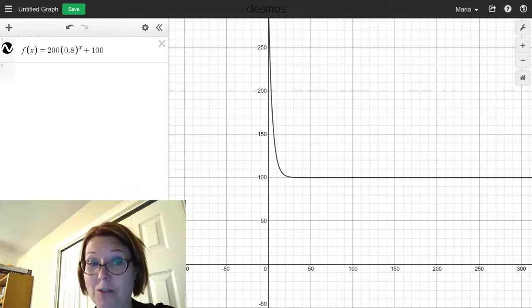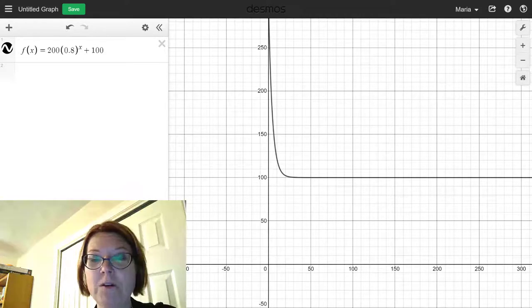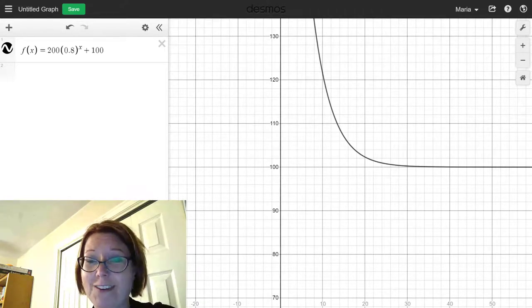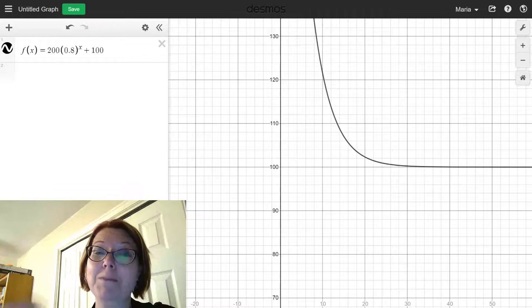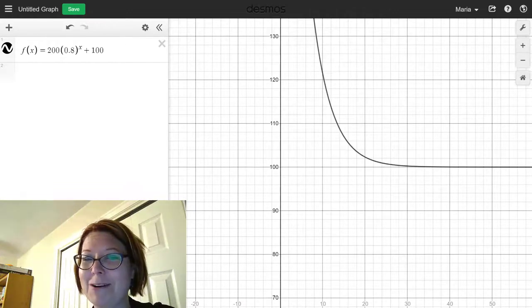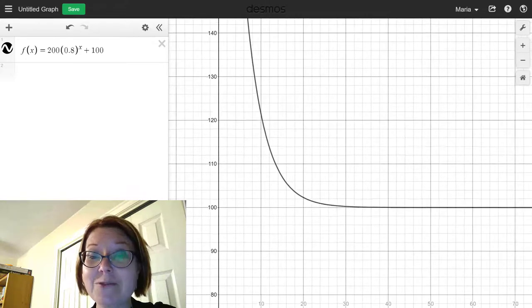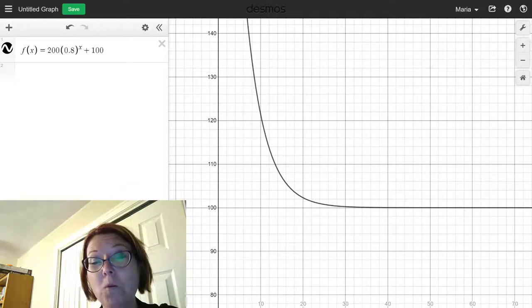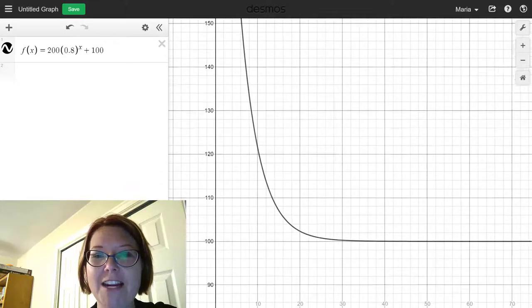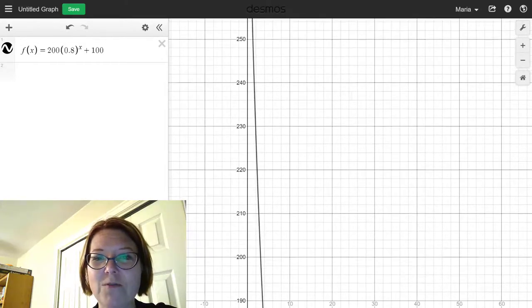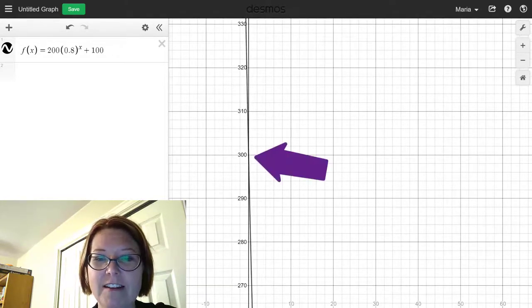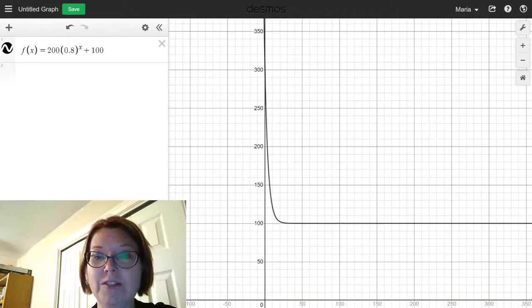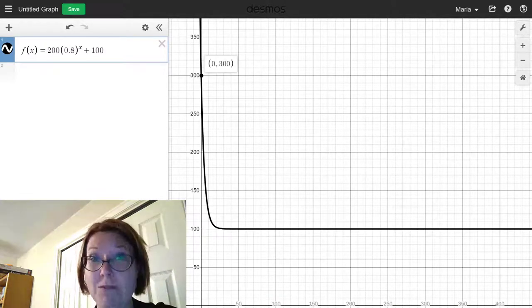And if you zoom out a ways to find the graph what you're going to see is that there's a very distinct horizontal asymptote at what looks like it might be 100 now. We will need to zoom in to kind of verify that. But we also know that the graph used to have a horizontal asymptote at 0. So moving it up to 100 would make sense since we think we added 100 to the original graph. This is a decreasing curve because the b value is 0.8. Its initial value would have been 200 except that we added 100 to it. So now its initial value we would expect to see at 300. Let's just double check that. And sure enough the initial value is now at 0 comma 300 instead of the 200 we would expect without the vertical translation.